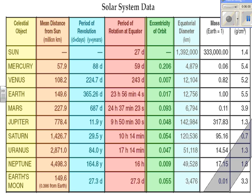In terms of mass, Earth has a mass of one unit, and all other planets are compared relative to Earth. The planet most similar in mass to Earth is Venus, with a mass of 0.82. The largest mass in the solar system belongs to Jupiter at 317.83.